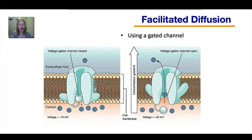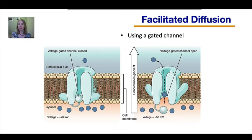The gated channel doesn't actually have a ball and chain like shown in the picture, but the protein does have amino acids that can close the channel, and then the protein changes shape to open the channel at just the right time. A wide variety of signals determine whether that gate is open or closed. The one shown in this picture functions in your nervous system, and this gated channel opens when the electrical charge inside the cell changes.